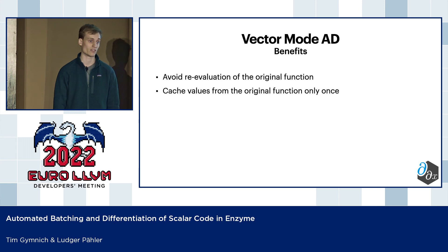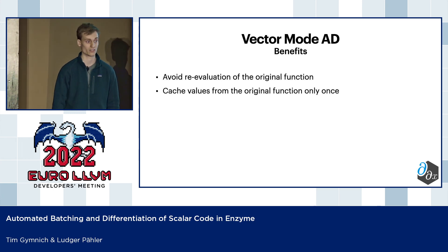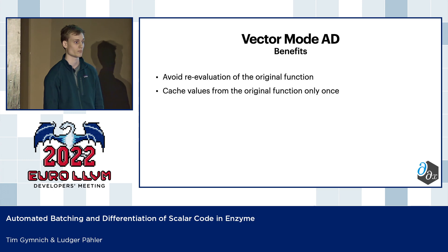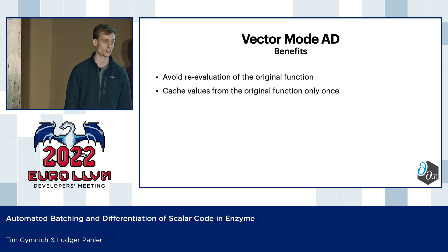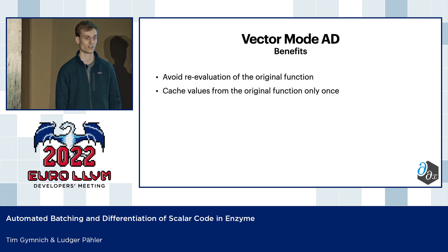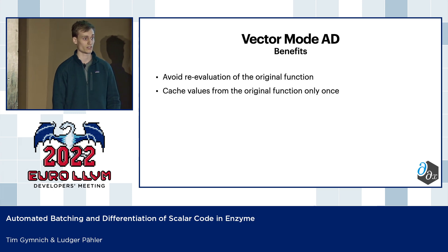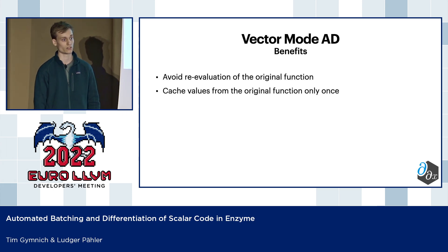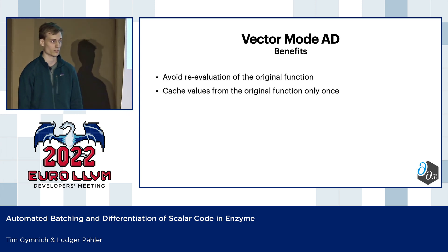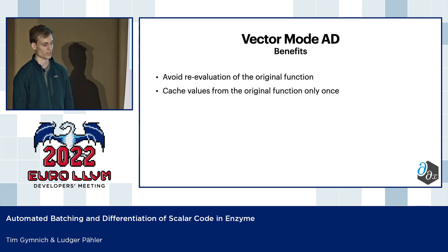In the case of reverse mode, since we might need to reuse some of the values from the primal function in the reverse pass, we can perform all the caching and re-materialization only once for each gradient with respect to the output.